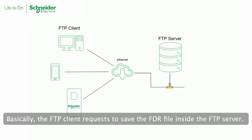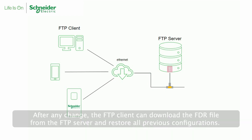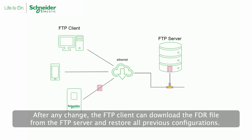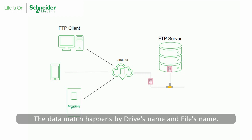Basically, the FTP client requests to save the FDR file inside the FTP server. After any change, the FTP client can download the FDR file from the FTP server and restore all previous configurations. The data match happens by drive's name and file's name.